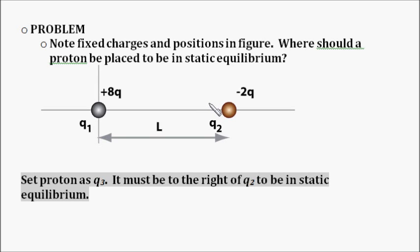Note the fixed charges and positions in the figure. So we have a positive 8q charge on this particle 1, a distance L from that will have particle 2 with a charge of negative 2 times q.